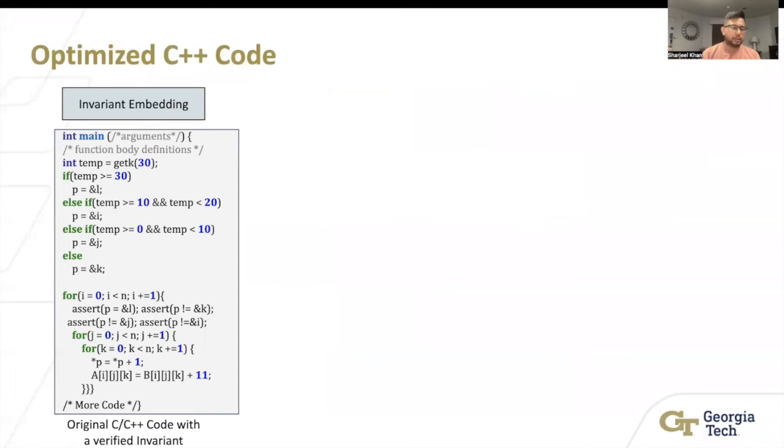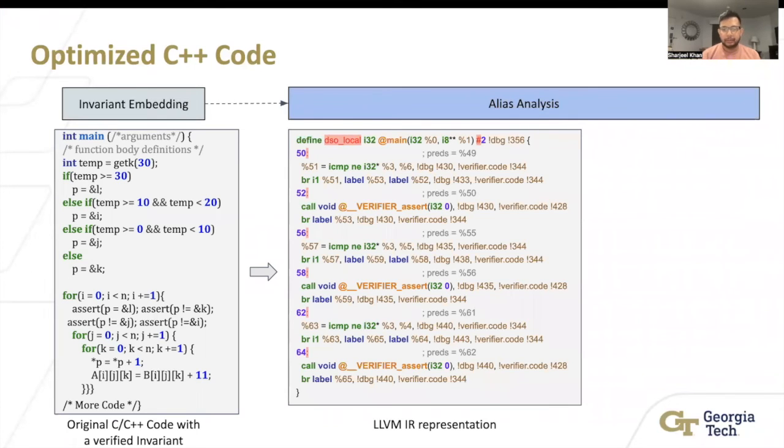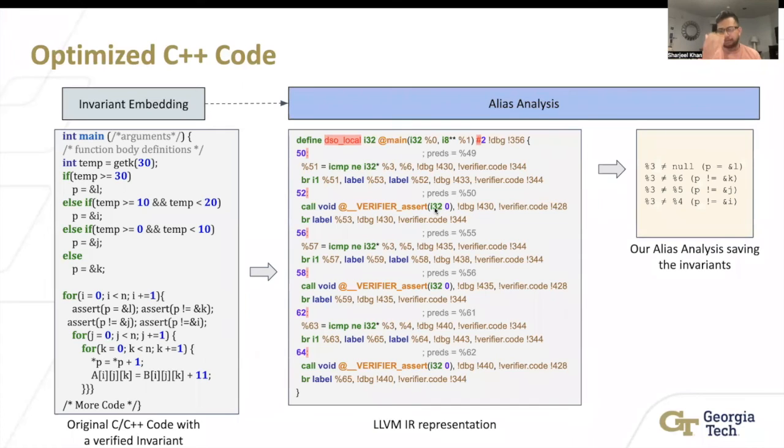In this case, assert p points to L. So that means that p doesn't point to other pointers. You get this LLVM IR, basically like last time, a bunch of compares and not equals to, and then verifier assert that's false. Basically you're saying that p is not equal to k, p not equal to j. And we see this in the map in our analysis.